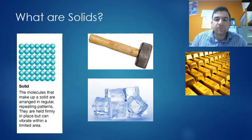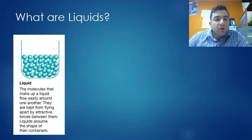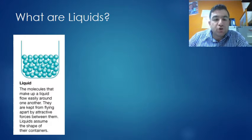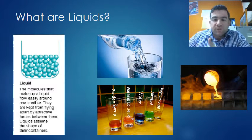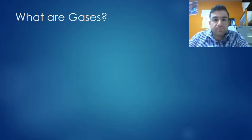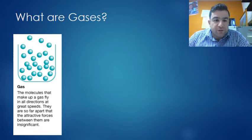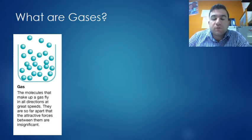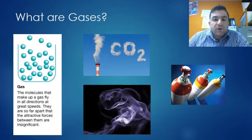What are liquids? The molecules that make up liquids flow easily around one another. They are kept from flying apart by attractive forces between them. Liquids assume the shape of the container - look at water, alcohol, vegetable oil, even metals when we heat them up enough. What are gases? The molecules that make up gas fly in all directions at great speeds. They are so far apart that the attractive forces between them are insignificant - like carbon dioxide, oxygen, helium.